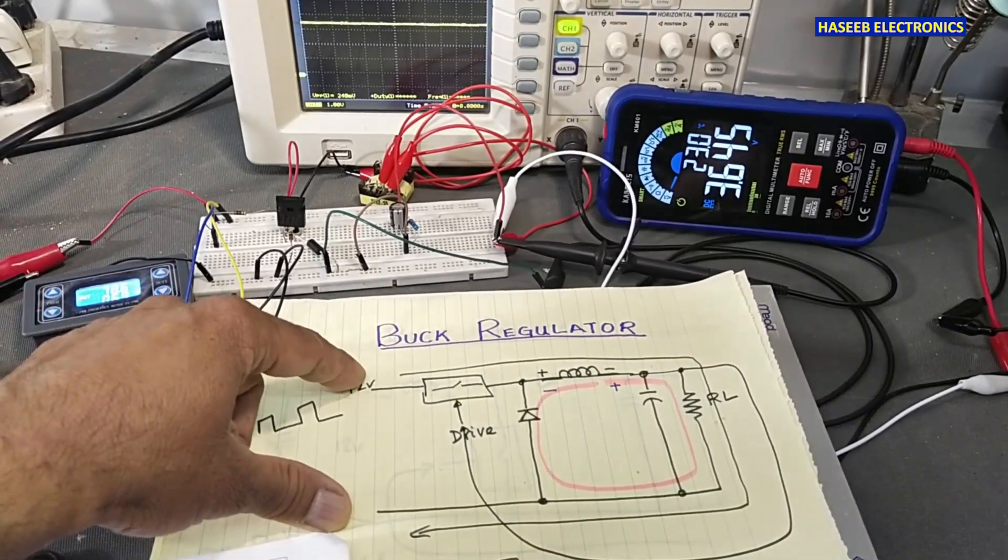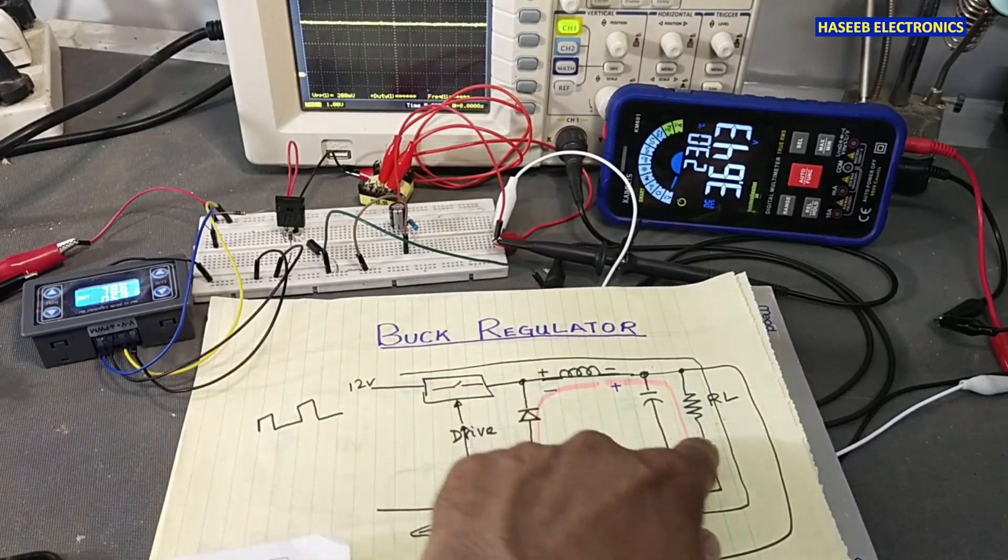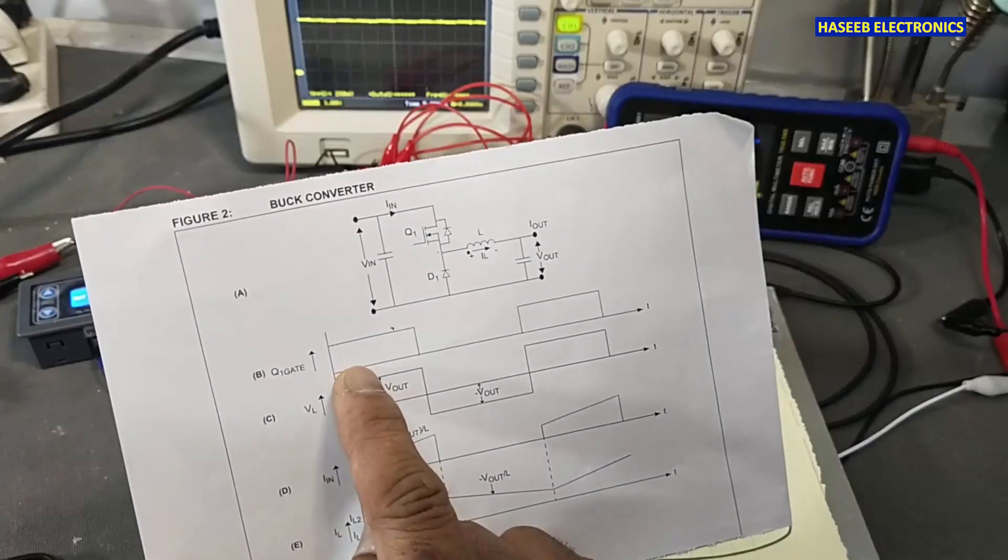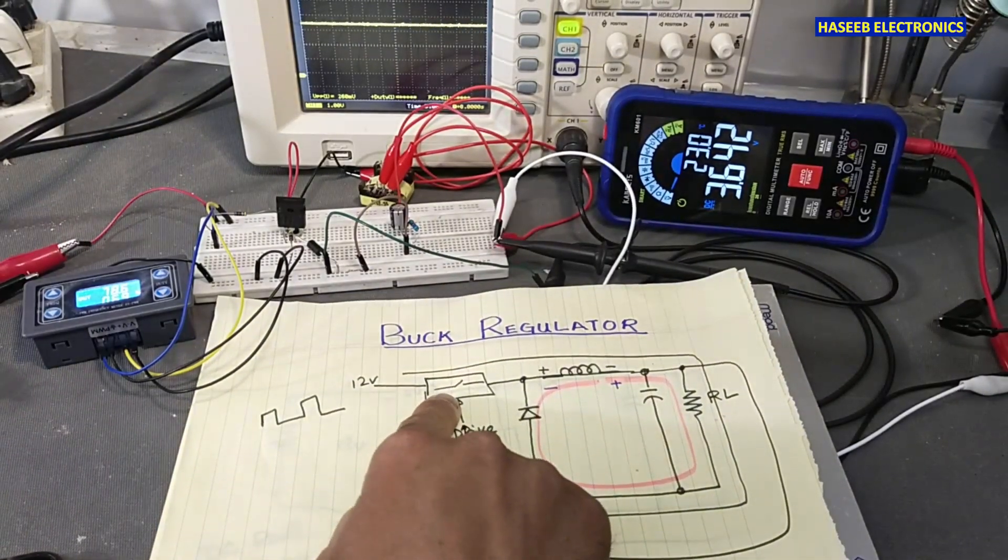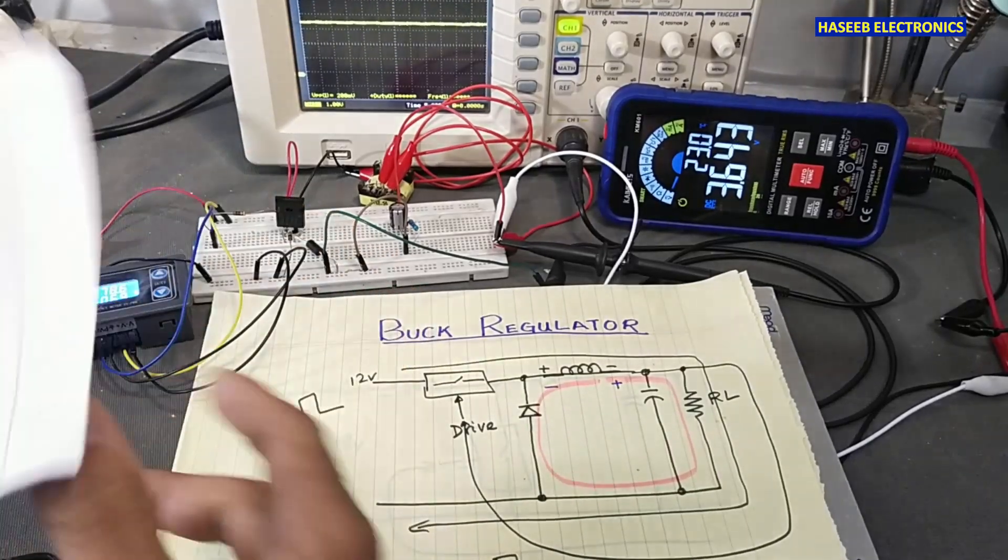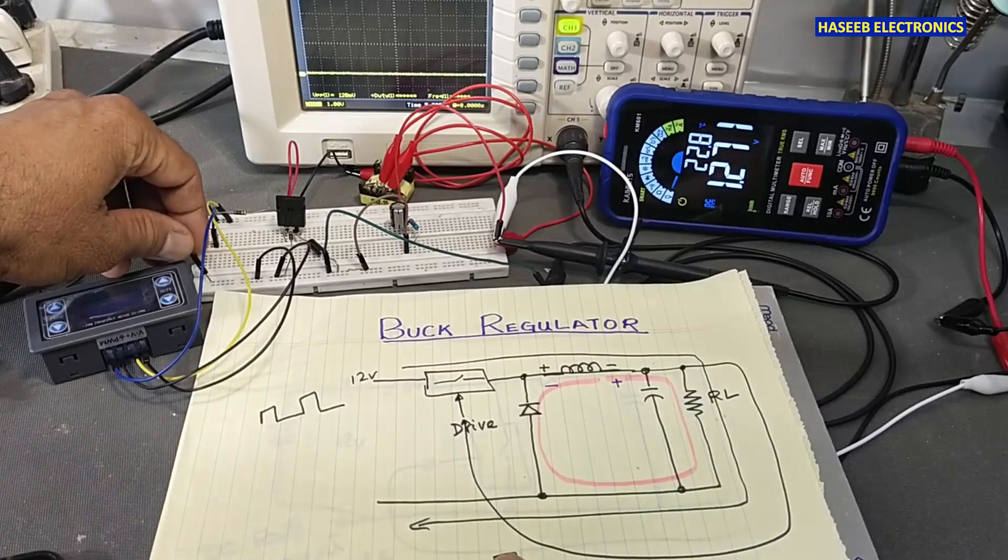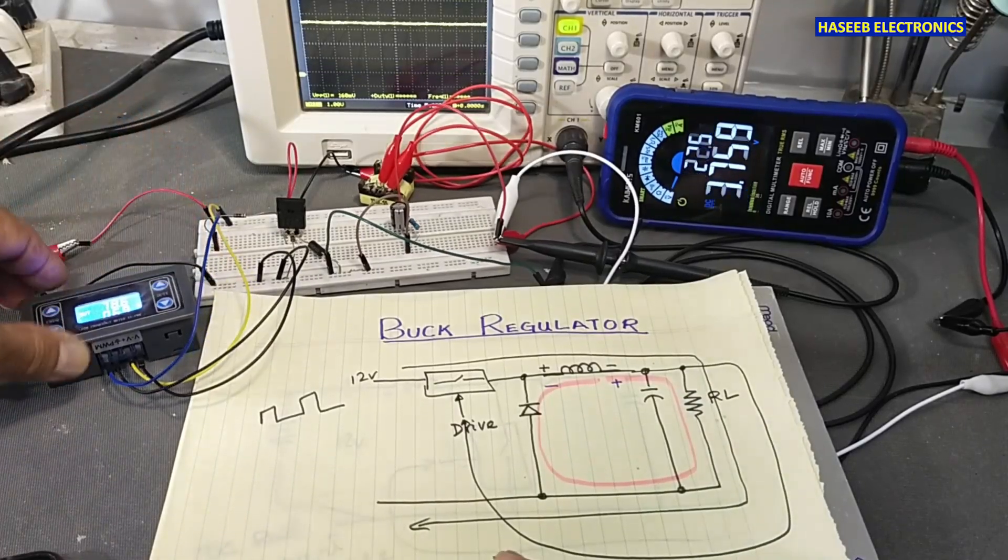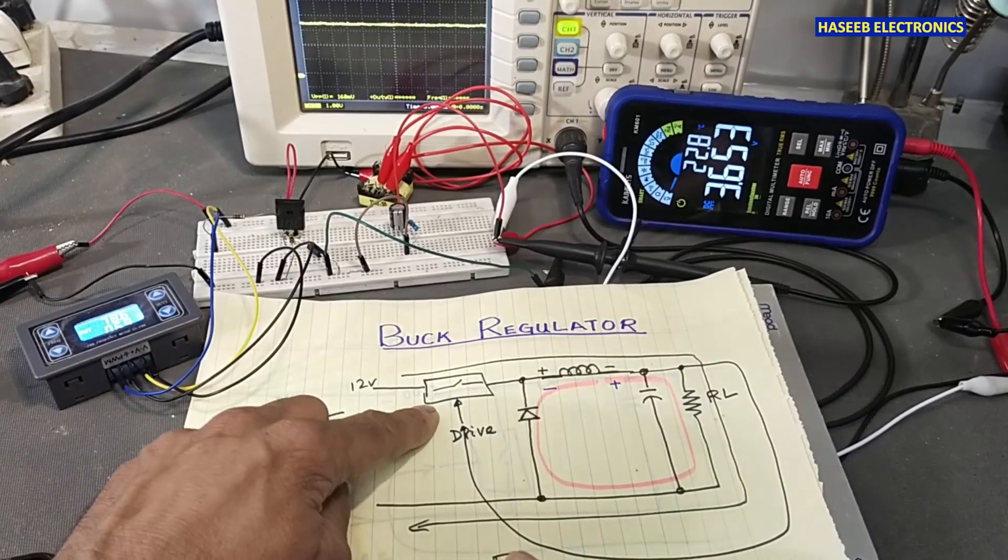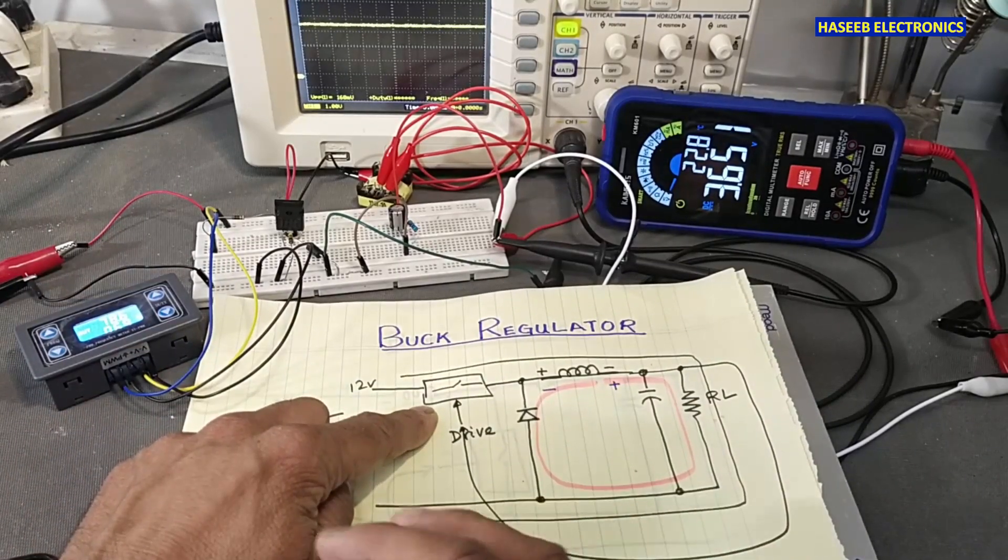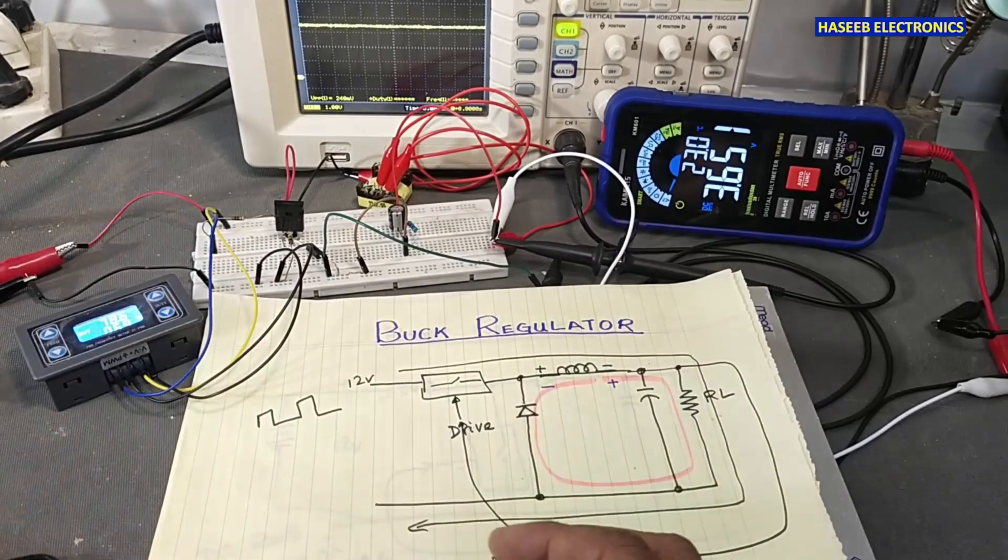In the on time, when this MOSFET or IGBT switch turns on, it will turn on by means of this PWM generator. Either we are using any IC, any SMPS controller, or any buck regulator IC, it will sample the voltage.